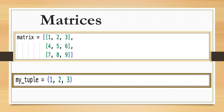In Python, matrices can be represented using a nested list or using a specialized library known as numpy. Using a nested list you can create a matrix as a list of elements where each inner list represents a row. Here is an example of a 3x3 matrix: the first row is 1 2 3, the second row is 4 5 6, and the third row is 7 8 9. You can access individual elements using matrix[0][0], which gives the element in the first row and first column, which is 1.